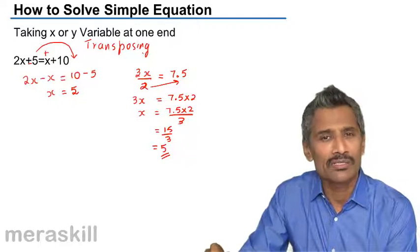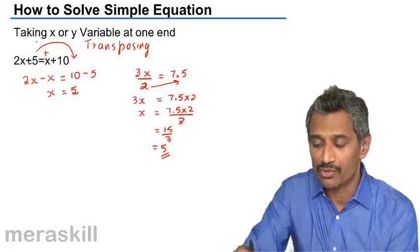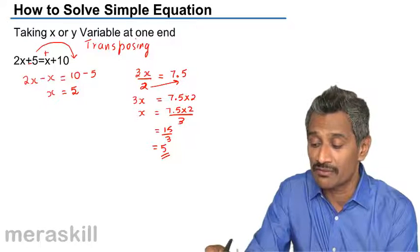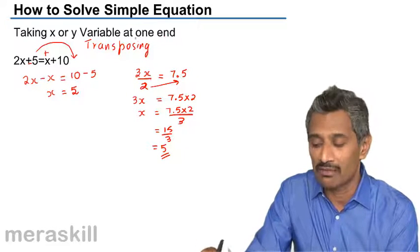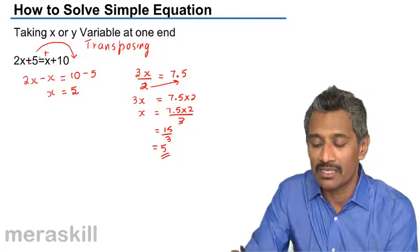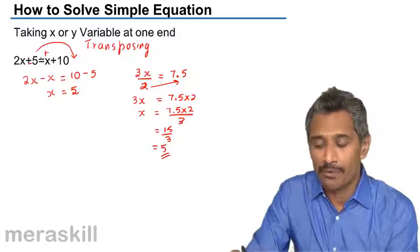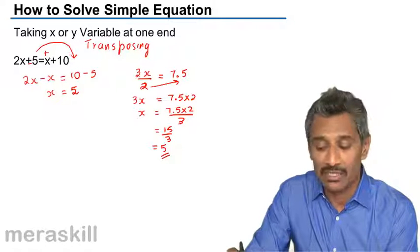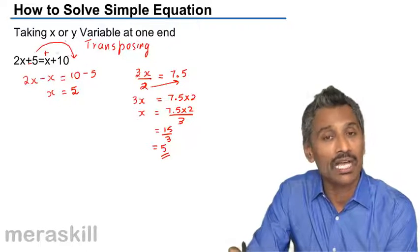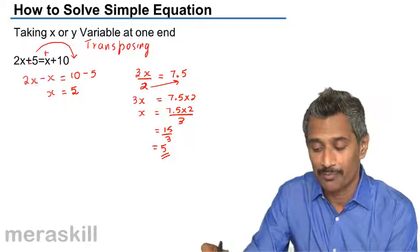This is how to solve a simple equation. We are taking x or y, which is a variable, to one side of the equation or at one end, and collect the constants, which are pure numbers that don't have any variables associated with them, and take them to the other side of the equation.